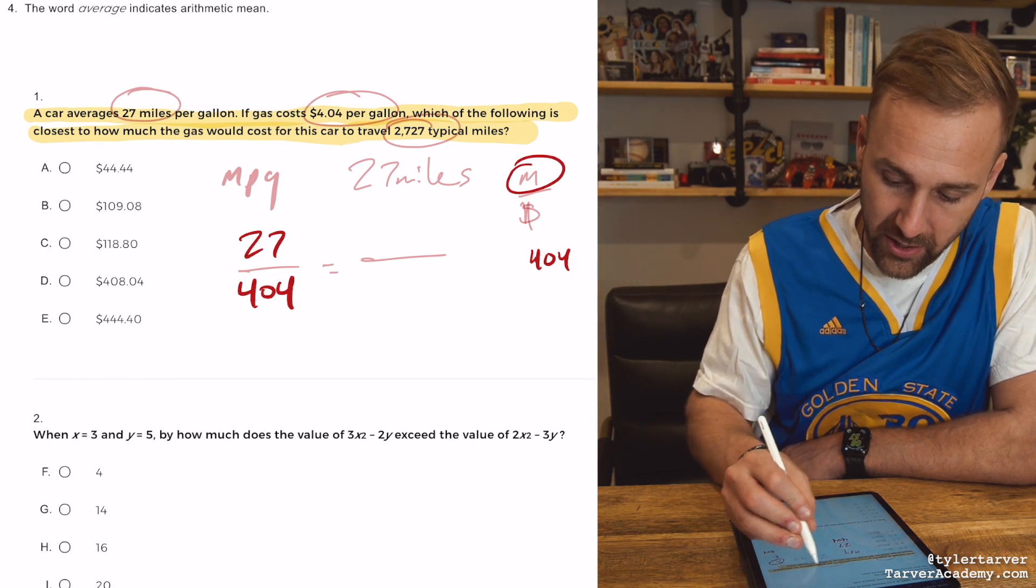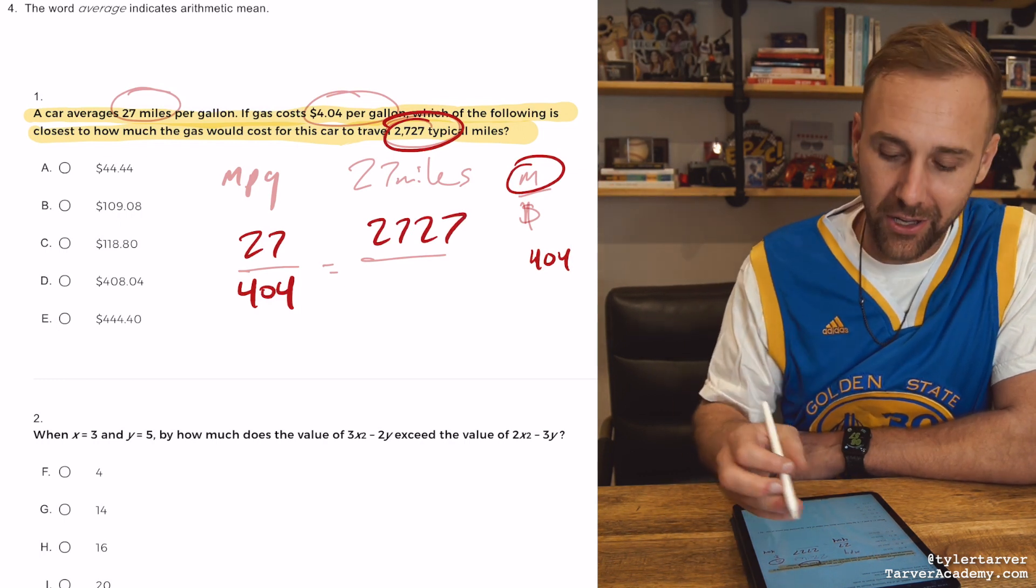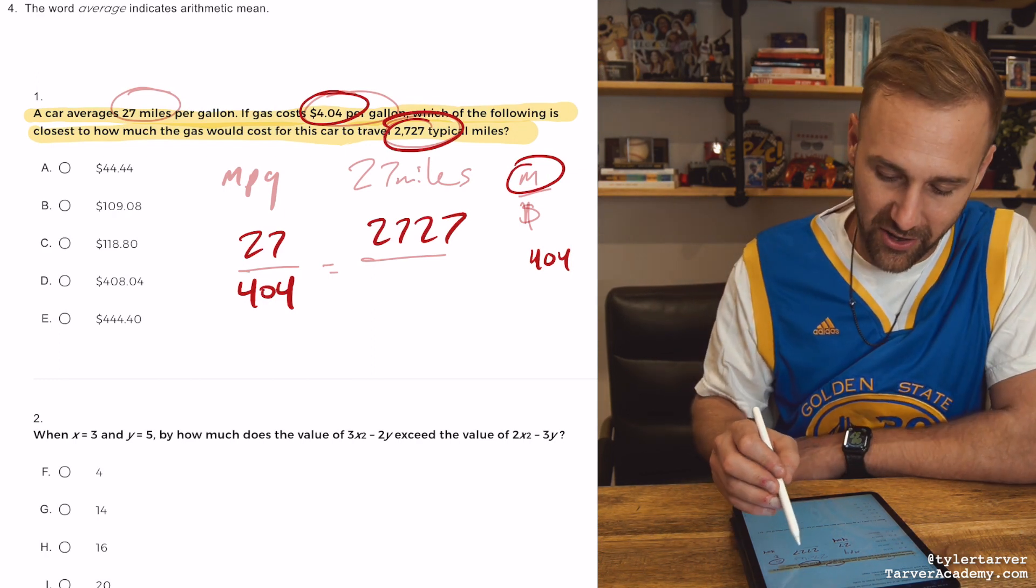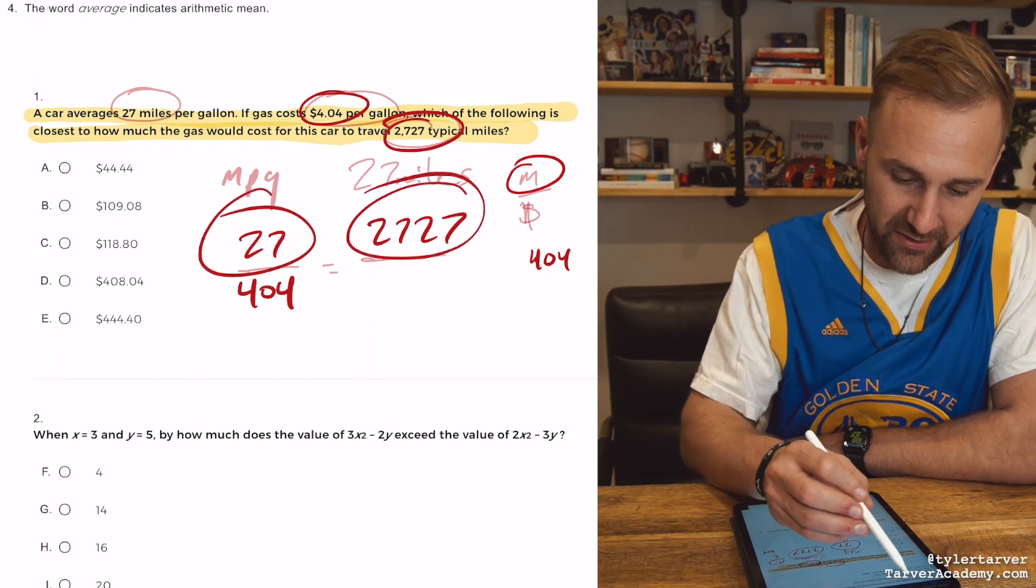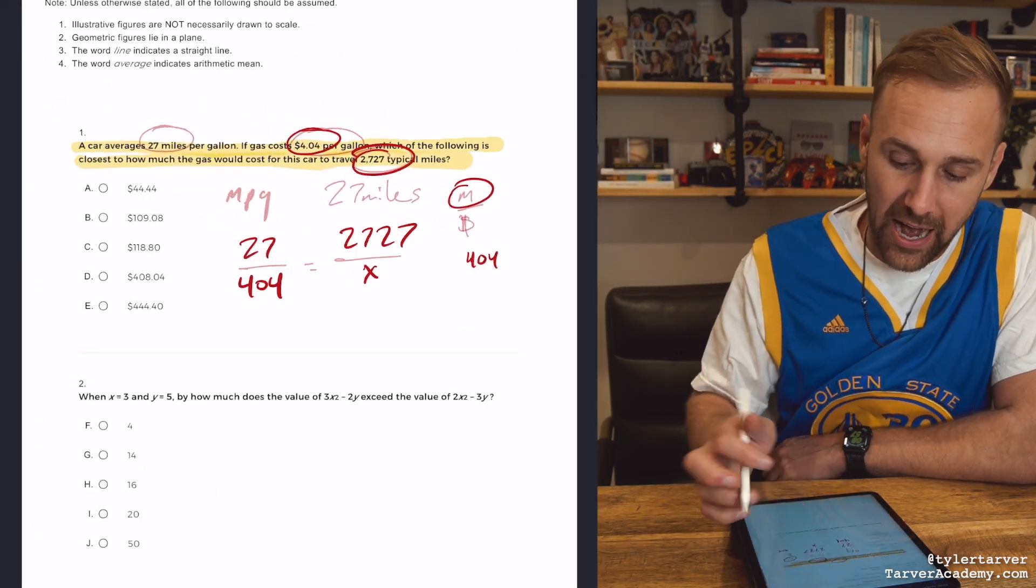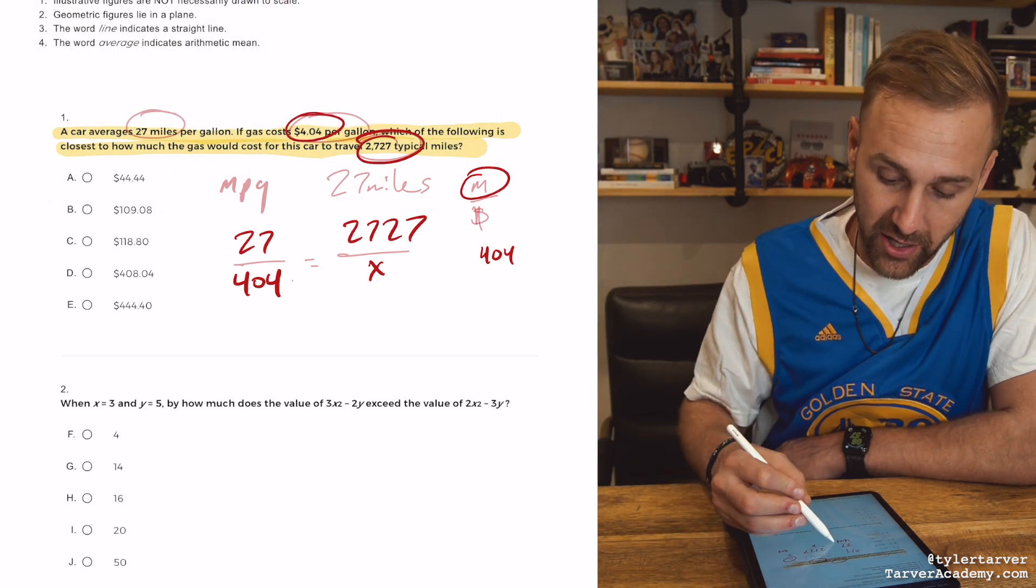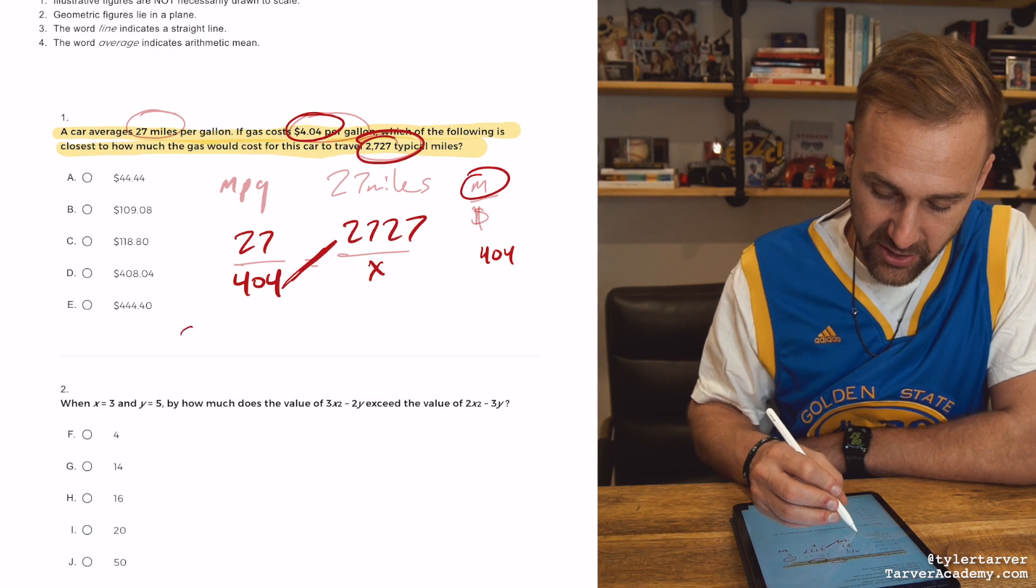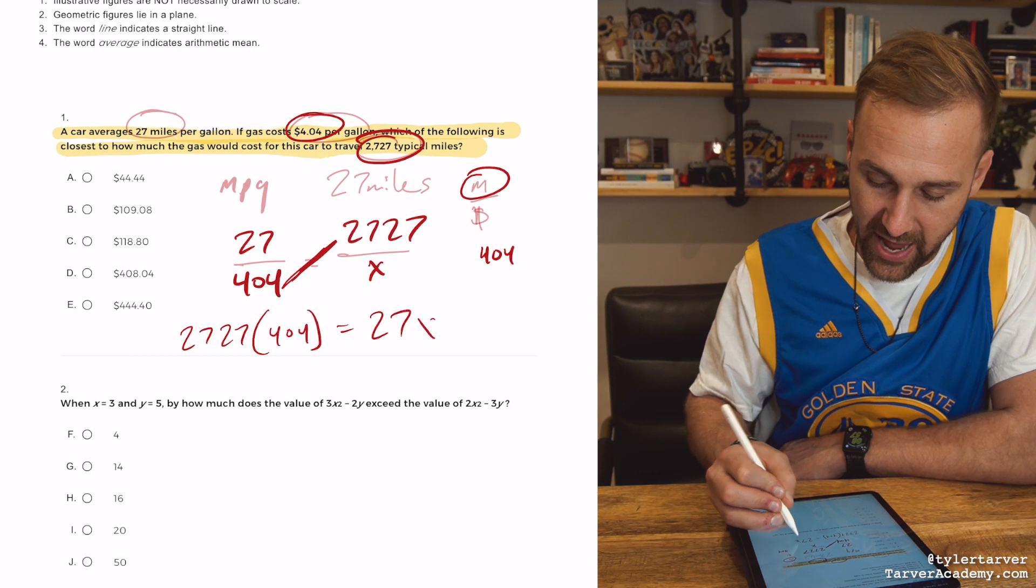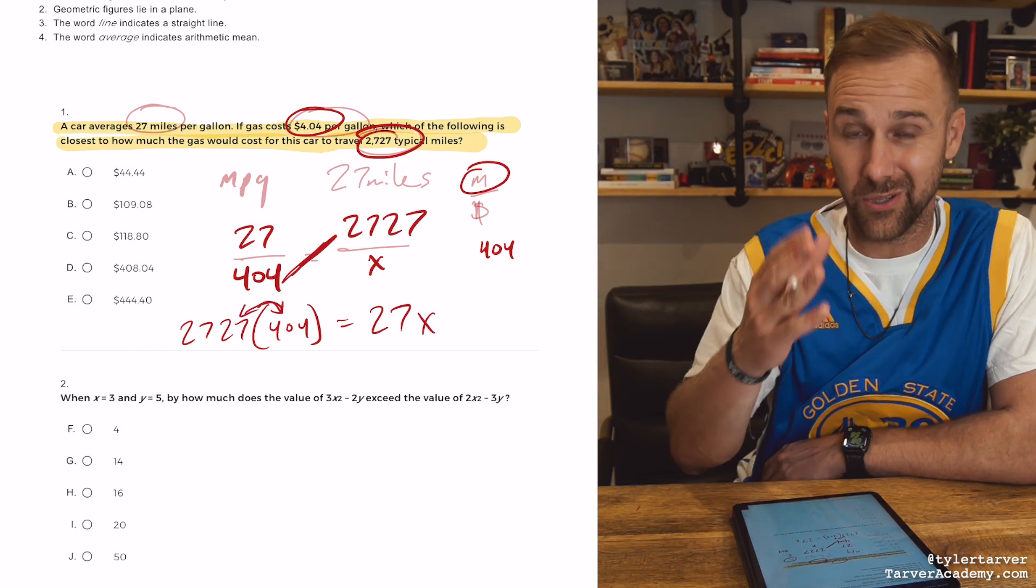So I'm going this many miles now, 2727. So some people might be like, oh, it's $4.04. And they're just going to either put 404.04 because they just saw that it's 272727. Don't do that. Okay, that's wrong. So then I'm going to put X here. I like this one because you can cross multiply and divide. And I think that's a pretty easy way to do it. So I'm going to cross multiply these. So it'll be 2727 times 404 equals 27X. Then I'm going to multiply these two. And then I'm going to divide 27.